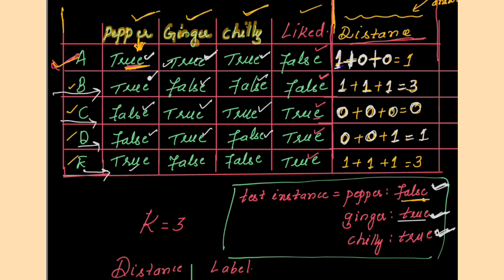For row 5 (the last row): pepper true vs false — different, so 1. Ginger false vs true — different, so 1. Chili false vs true — different, so 1. Total: 1 + 1 + 1 = 3. So the distance values obtained for all five rows are: 1, 3, 0, 1, 3.